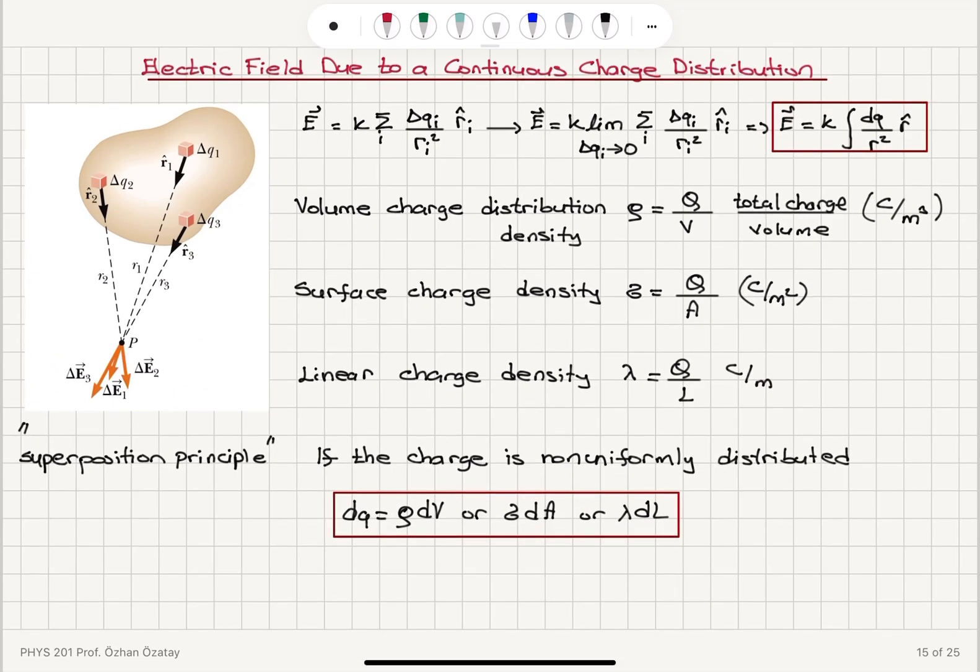So basically, these definitions rho, sigma, and lambda being total charge divided by the total volume, area, or L are corresponding to the scenario where I have a uniform distribution. So this is the uniform case.